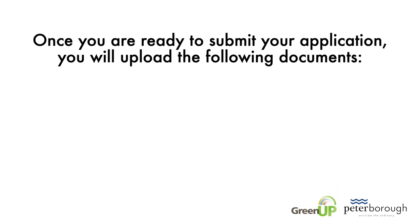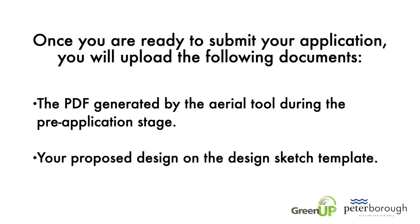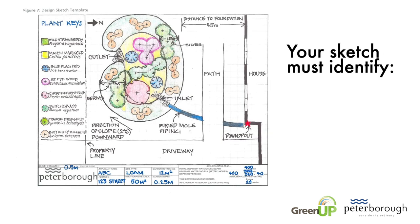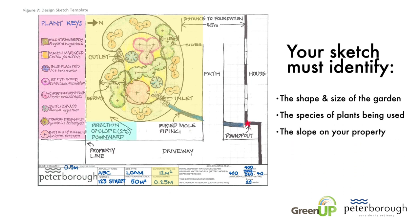Once you are ready to submit your application, you will upload the following documents: the PDF generated by the aerial tool during the pre-application stage, which should include the area of the captured roof section as well as the size and location of the rain garden; and your proposed design on the design sketch template. Your sketch must identify the shape and size of your garden, the species of plants being used, the slope on your property, as well as the results of your drainage test.